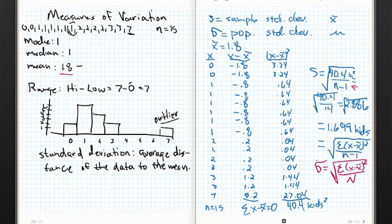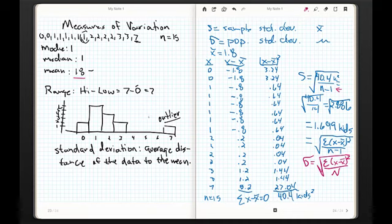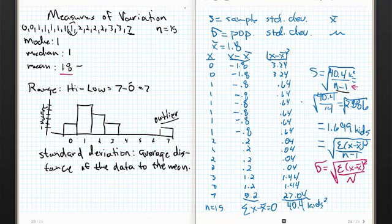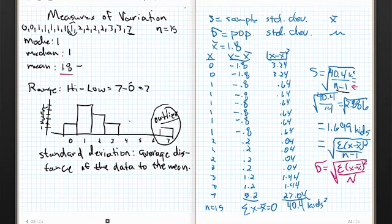I'm going to show you on the calculator how to do all of this so you can always check your work. Now let's start playing around with what the standard deviation can actually do for us. The standard deviation is more or less the average distance of the data values from the mean. Big standard deviations means the data values are all over the place on both sides of the mean; small standard deviations means everything is grouped very tightly around the mean. And I made a bold claim that the value of seven — the kid with seven siblings — was an outlier.